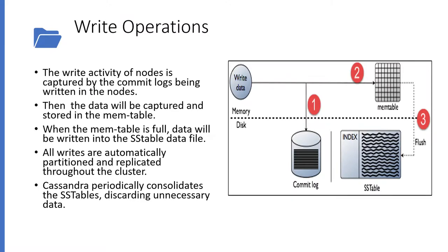Here is how write operations happen in Cassandra. First, write activity on the node is captured by the commit log — written on that particular node — and this is used for crash recovery, similar to transaction logs in RDBMS. The data is then sent to the mem table, which is a memory-resident area. When the mem table is full, data is flushed to the SS table on the hard disk. Cassandra periodically consolidates the SS table and discards unnecessary data.